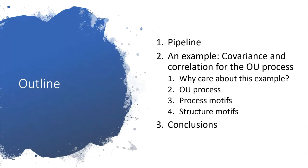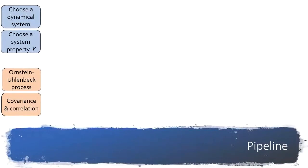Here's the outline for the remainder of my talk. I'll present a pipeline that starts with a mathematical model of a dynamical system and a system property of interest. The pipeline leads to microprocesses, which I call process motifs, and motifs in network structure, which I call structure motifs. I'll demonstrate how this pipeline works using the simple examples I mentioned — covariance and correlations of pairs of variables in the Ornstein-Uhlenbeck process.